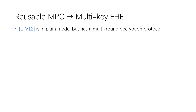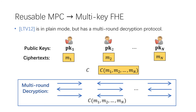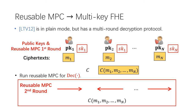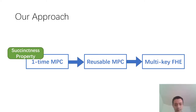Our starting point is the observation that LTV12 is in fact in the plain model, but has a multi-round decryption protocol. Our idea is to run a reusable MPC for the decryption circuit of LTV12, so we don't need to run this multi-round decryption protocol. Specifically, in the one-round decryption, we simply output the reusable MPC second-round messages. And since the first-round message of this reusable MPC doesn't depend on the circuit being evaluated, we can put the first-round message into the public keys.